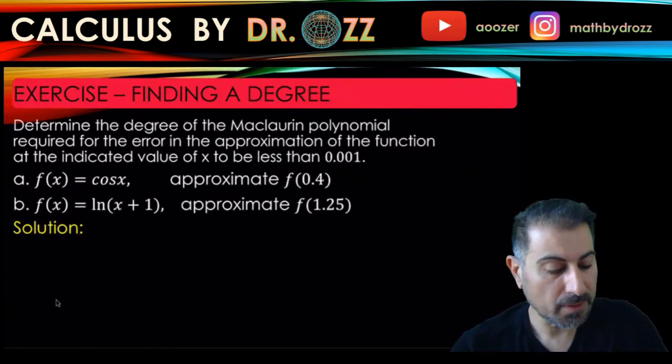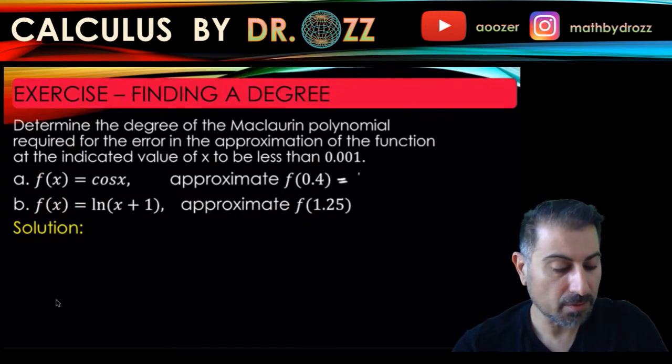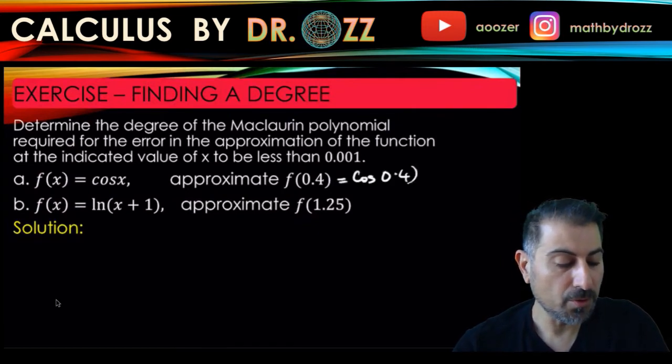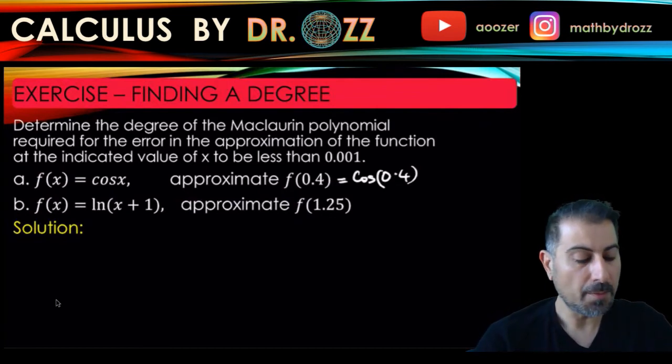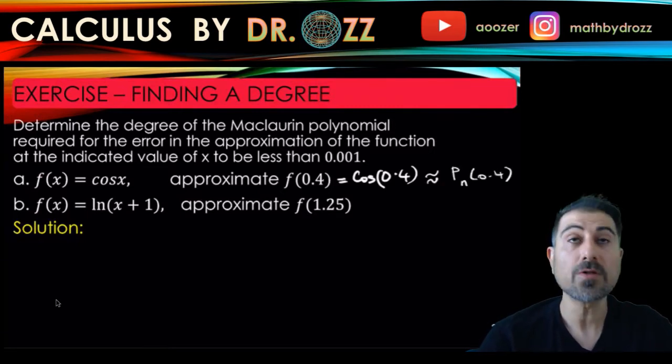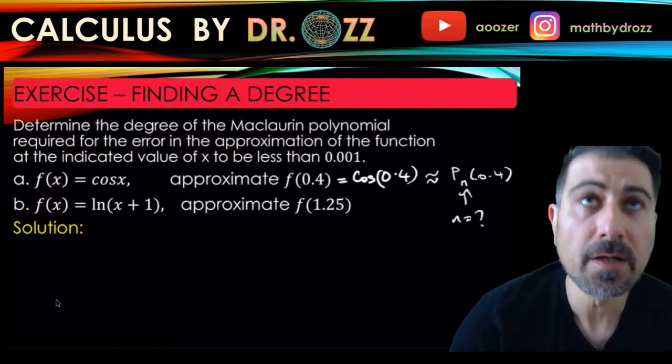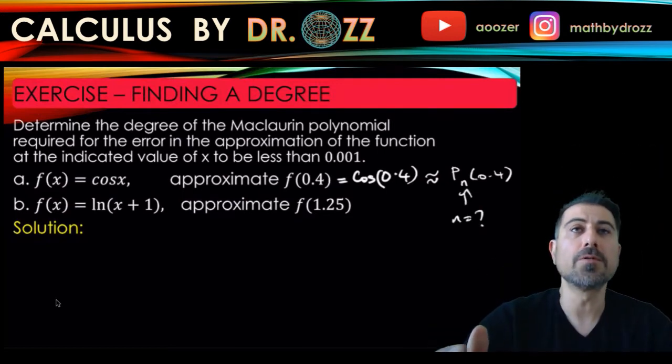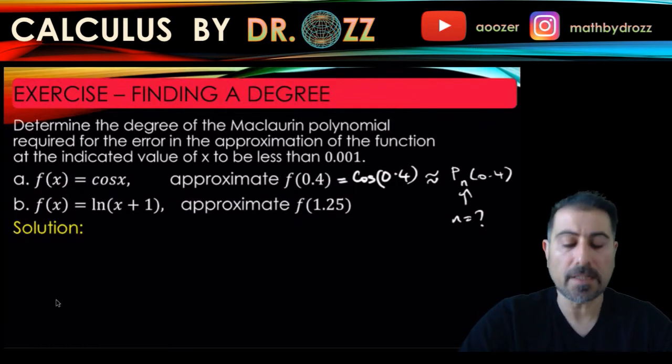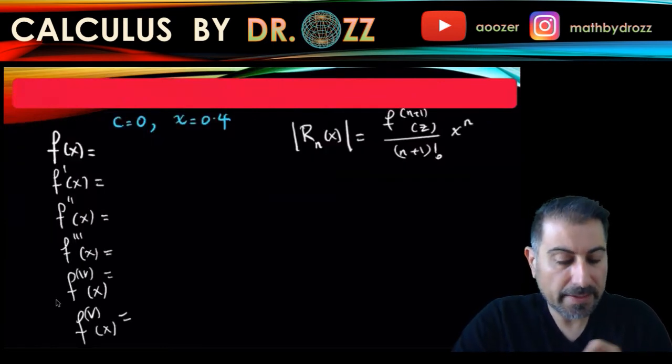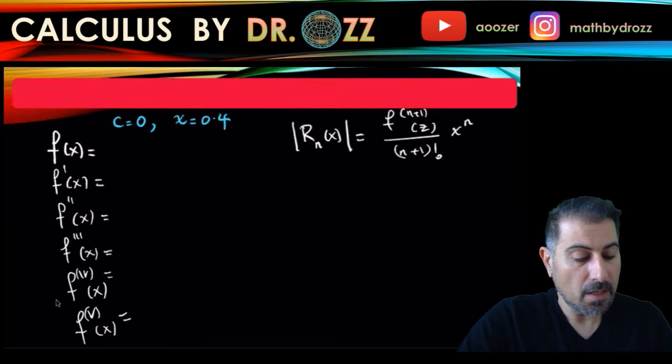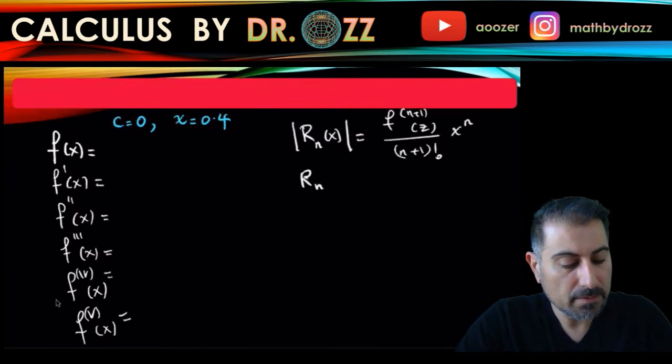And c is 0 because this is the Maclaurin polynomial or expansion, and x is going to be 0.4 because we want to evaluate or we want to approximate cosine 0.4. This is what we were trying to approximate, so we don't have a calculator and we want to approximate this, so we want to approximate it by P n at 0.4.